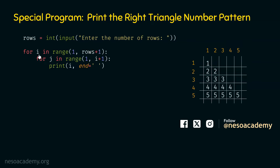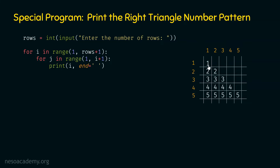If we are at row 1 and column 1, value 1 is printed. After the inner for loop terminates, we execute print() to move to the next line and print the rest of the values. In this way, we can print all values on the screen. This is how our program looks.